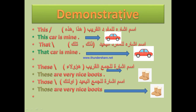Now we take Demonstratives. What's the meaning of Demonstrative? Demonstrative means اسماء الاشارة. The first one is 'this' — اسم اشارة المفرد القريب، بمعنى هذا أو هذه. For example: This car is mine — هذه السيارة خاصتي. Look at the arrow here, it's very short — look at the car. 'This' is اسم اشارة المفرد القريب، بمعنى هذا أو هذه.